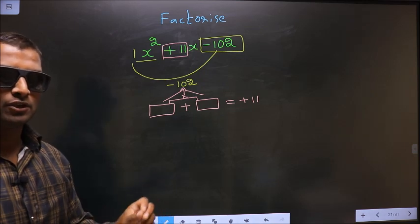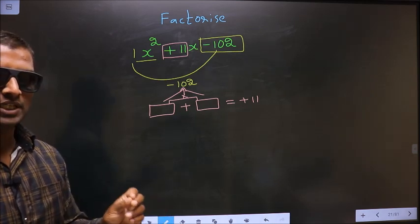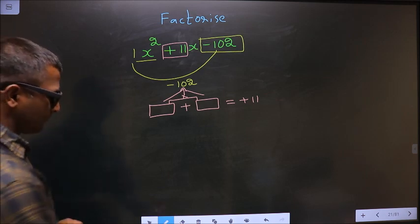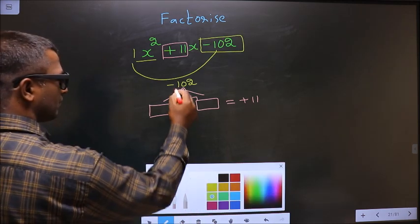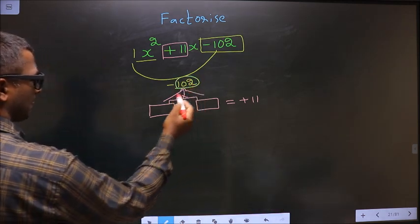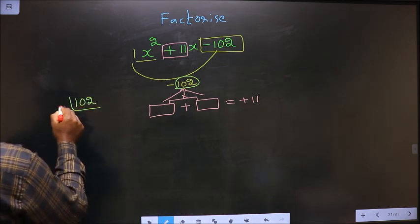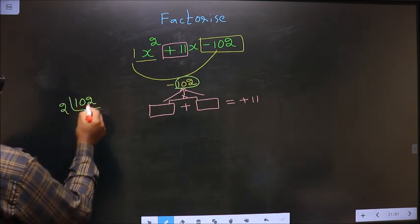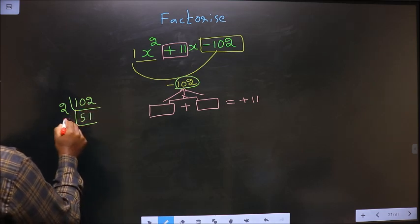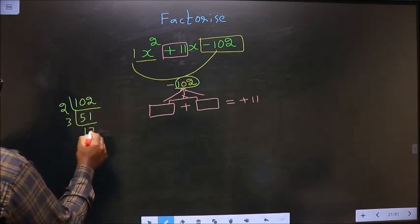Now to get those two numbers, we should take the prime factorization of 102. So 102: start with 2, which gives 51, then 3, which gives 17.